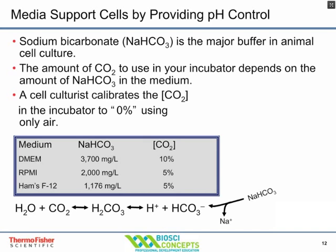The pH is controlled by the addition of sodium bicarbonate, which is the major buffer in cell culture media. Some media might contain HEPES, but HEPES tends to be toxic to animal cells, especially in the presence of light. The amount of CO2 you use depends on the media formulation. A cell culturist calibrates their CO2 incubator so that it reads 0% CO2 at ambient concentration.